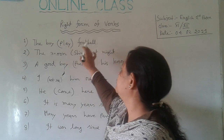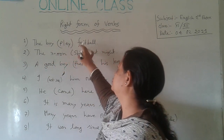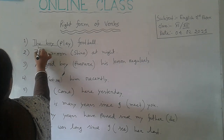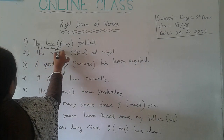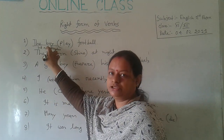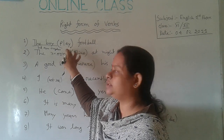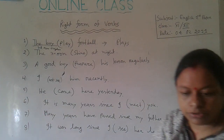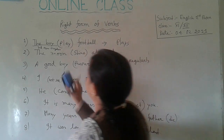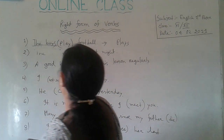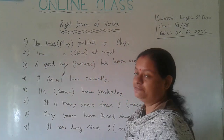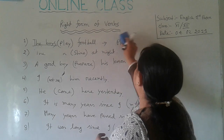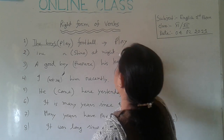Number one: 'The boy play football.' This is a present indefinite tense and the subject is third person singular. In present indefinite tense, when the subject is third person singular, we add 's' or 'es' after the verb. So the right form of verb will be 'plays' — 'The boy plays football.' If the subject is plural — 'the boys' — we won't use any 's' or 'es' after the verb; the right form will be 'play' — 'The boys play football.'